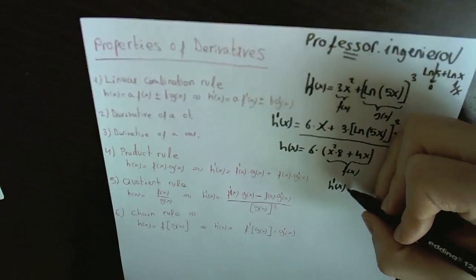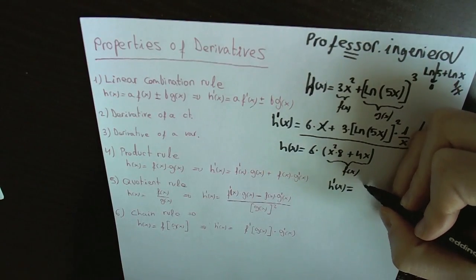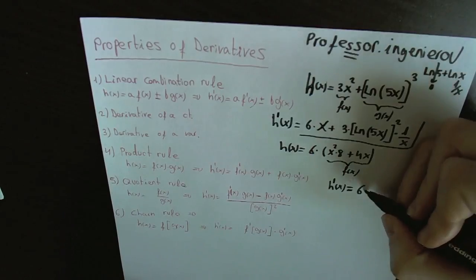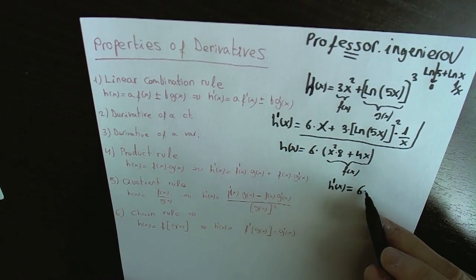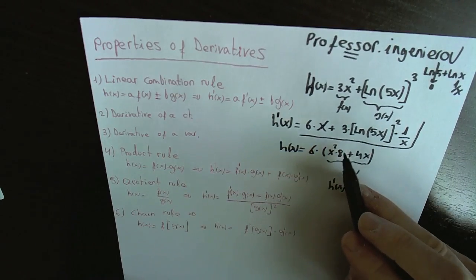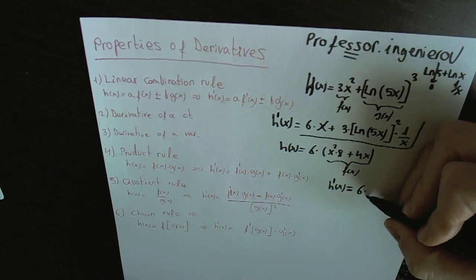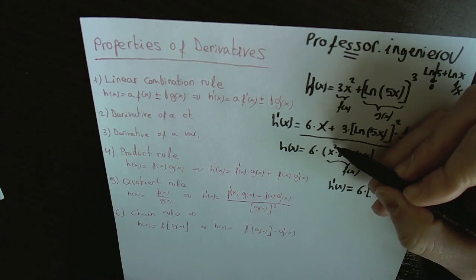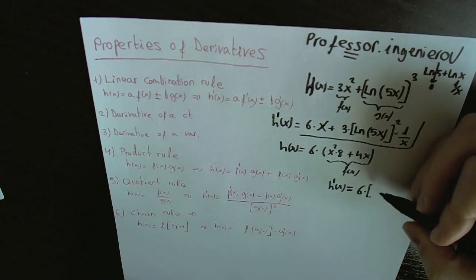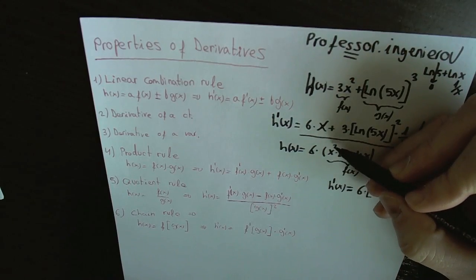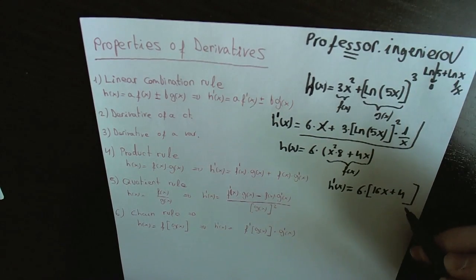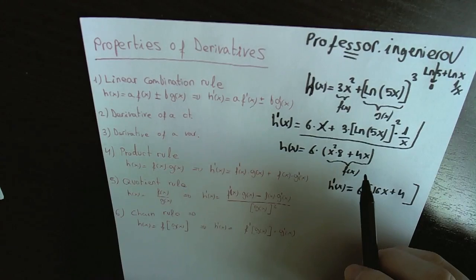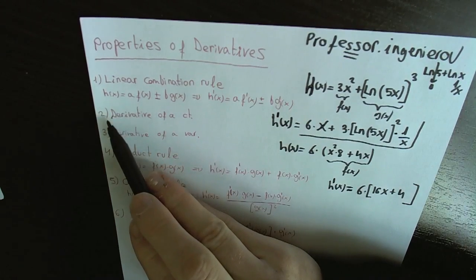We write constants as they are, then multiply by the derivative of the x-dependent function. In this case, for 8x squared the power two goes down and multiplies 8: 8 times 2 is 16x, with power 2 minus 1 equals 1. Then plus 4, because the derivative of 4x is 4 — which I will explain now with the next property.